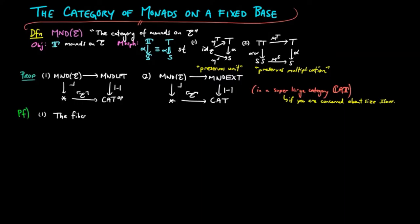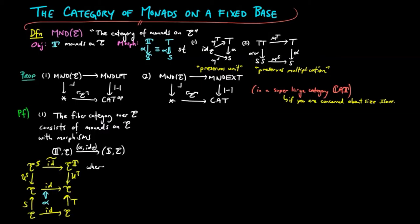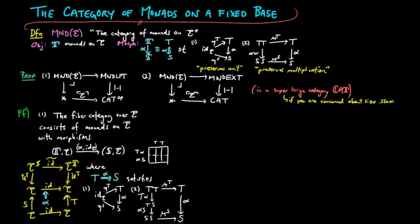For the proof of 1, we know how to construct fiber categories, which in this case must have monads on E as objects, and morphisms of the form alpha identity, which can be depicted in the following diagram. We showed alpha must satisfy 1 and 2, where in 2, the left-hand composition equals the horizontal composition alpha-alpha by naturality, as depicted in the string diagrams.